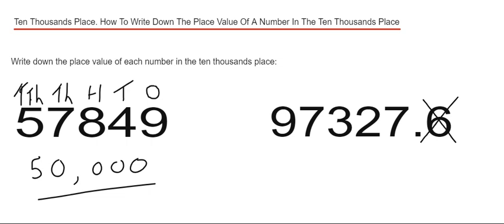From the right-hand side, starting from the decimal point: we've got seven in the ones, two in the tens, three in the hundreds, seven in the thousands, and then we've got nine in the tens of thousands.